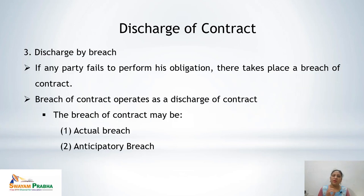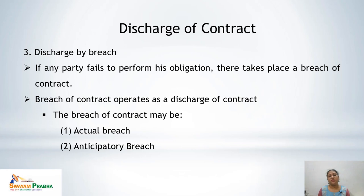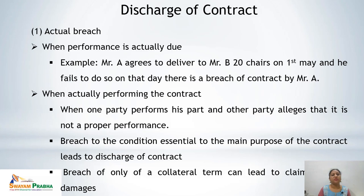The third mode is discharge by breach. When any party fails to perform the obligation involved in the contract, there is a breach of contract, which leads to discharge of contract. Breach of contract may be of two types: actual breach and anticipatory breach. Actual breach is when the performance was actually due. For example, A agrees to deliver to B 20 chairs on 1st May and fails to do so — that day there is a breach of contract by A.